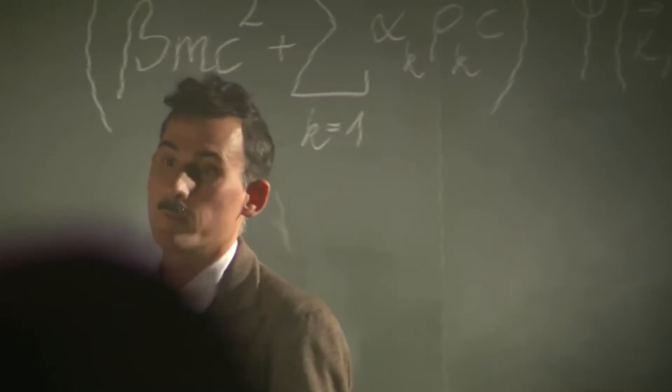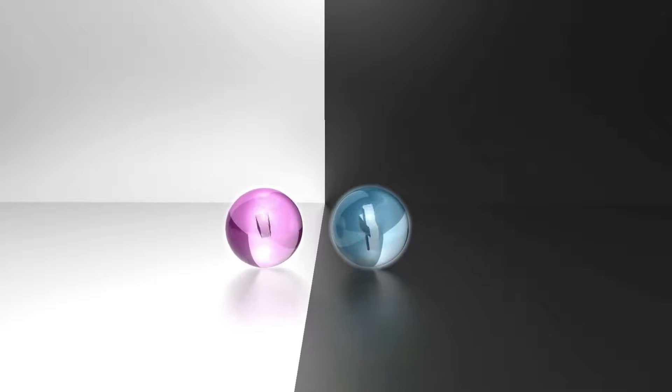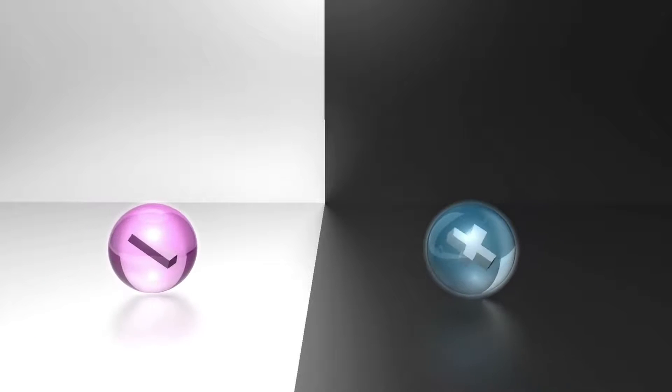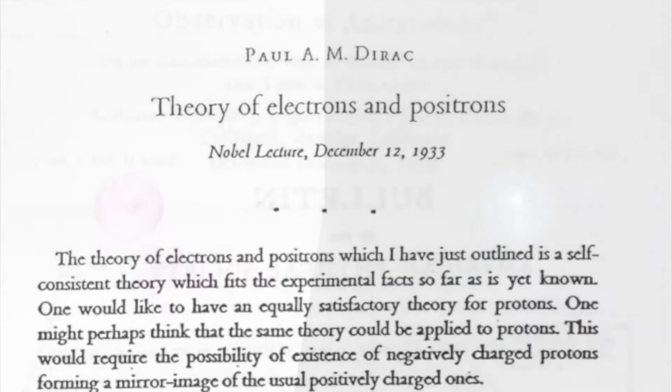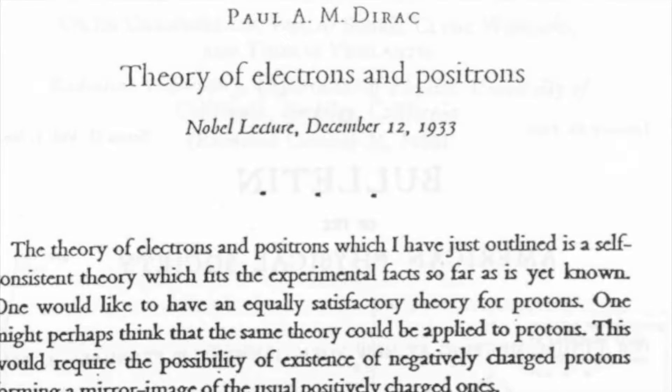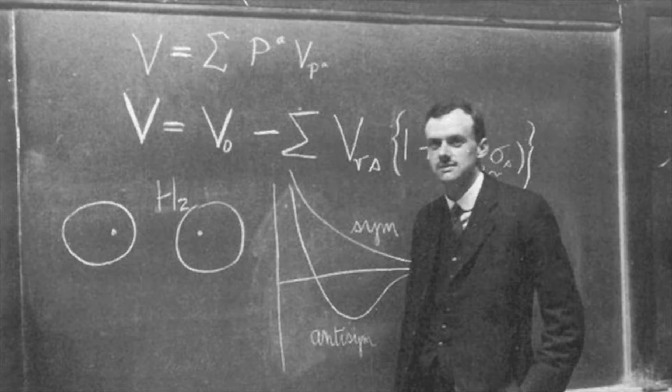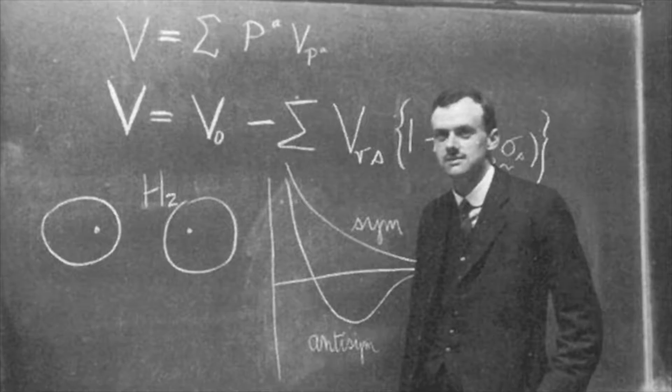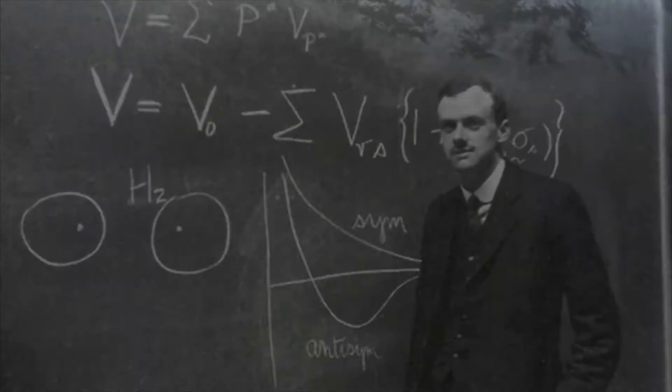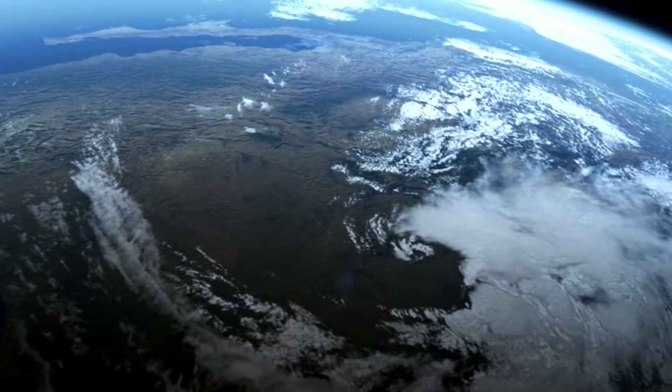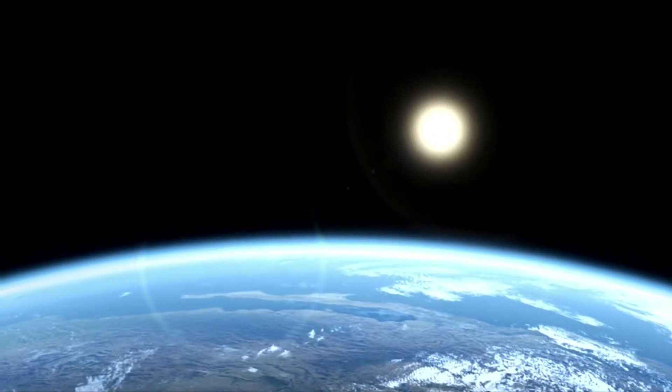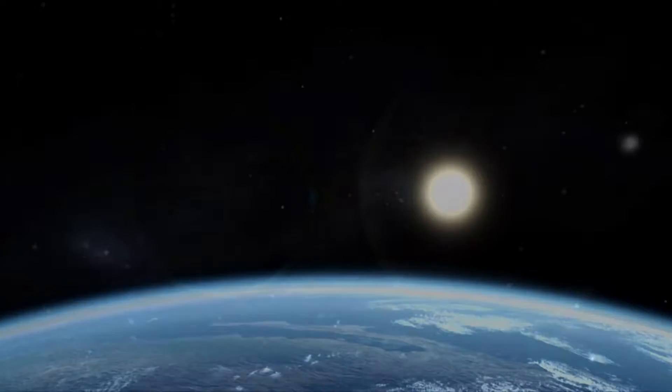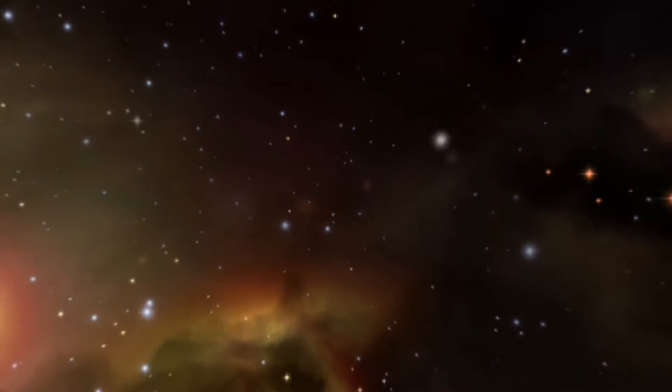As Dirac saw it, the electron and the positron are mirror images of each other. With all the same properties, they would behave in exactly the same way, whether in realms of matter or antimatter. In his Nobel Prize lecture in 1933, Dirac pondered a larger reality for antimatter. If we accept, he said, the view of complete symmetry between positive and negative electric charge so far as concerns the fundamental laws of nature, we must regard it rather as an accident that the Earth, and presumably the whole solar system, contains a preponderance of negative electrons and positive protons. It is quite possible that for some of the stars it is the other way about, these stars being built up mainly of positrons and negative protons.